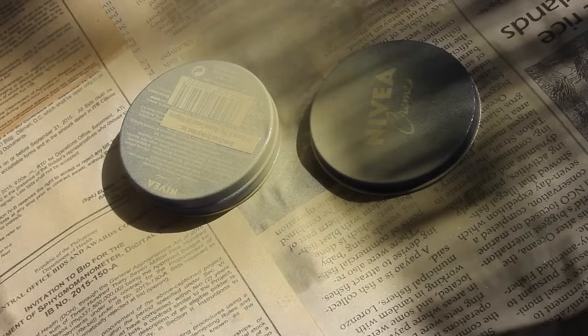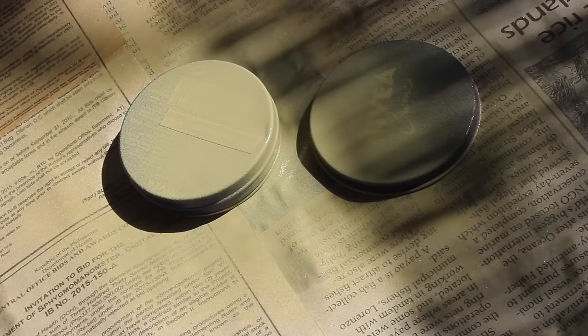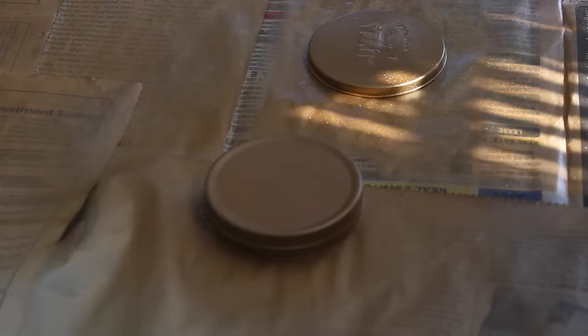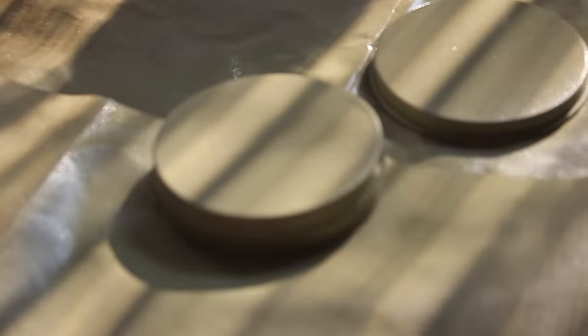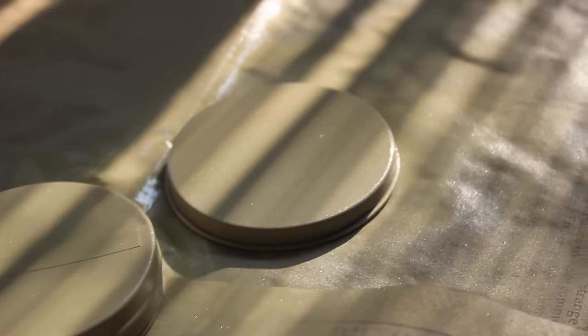Then just bring your Nivea cans outside and lay them down on newspaper with the inside part facing down, and then start to spray paint this. You have to do this two times, so you're going to spray paint it once with a thin layer, let it dry, and then spray paint it again. I'm just using a nice cream color and also a gold one for the bigger Nivea can that I had.